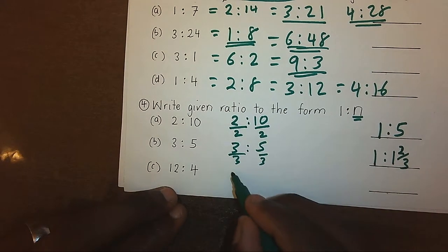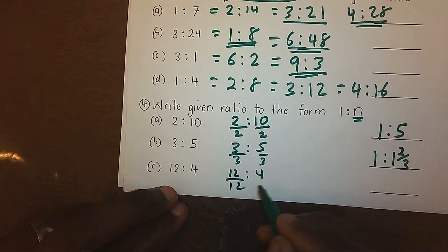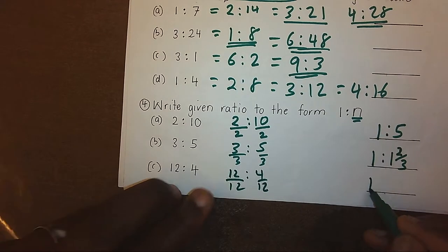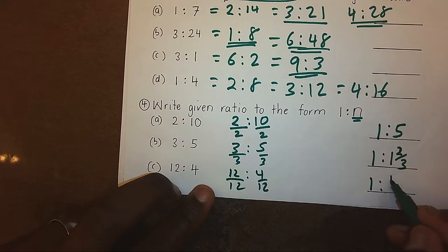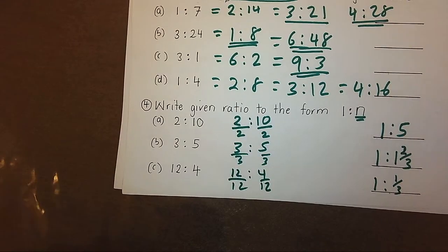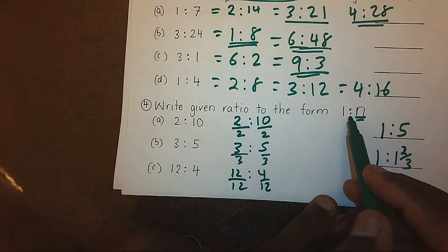In the last one, 12 ratio 4, we can divide by 12 on both sides. This side it will be 1, the other side we simplify it and it will be 1 over 3. Here, we have written this to the form 1 ratio N, where N will be anybody remaining after making the other side 1.